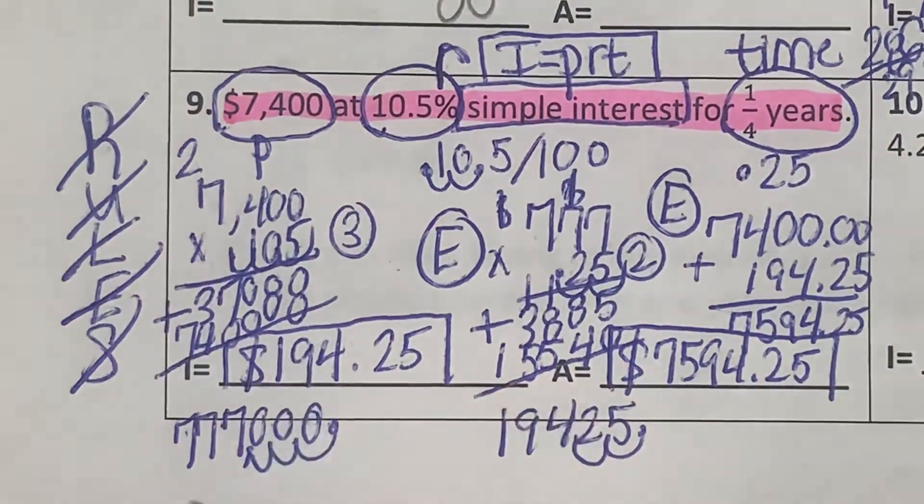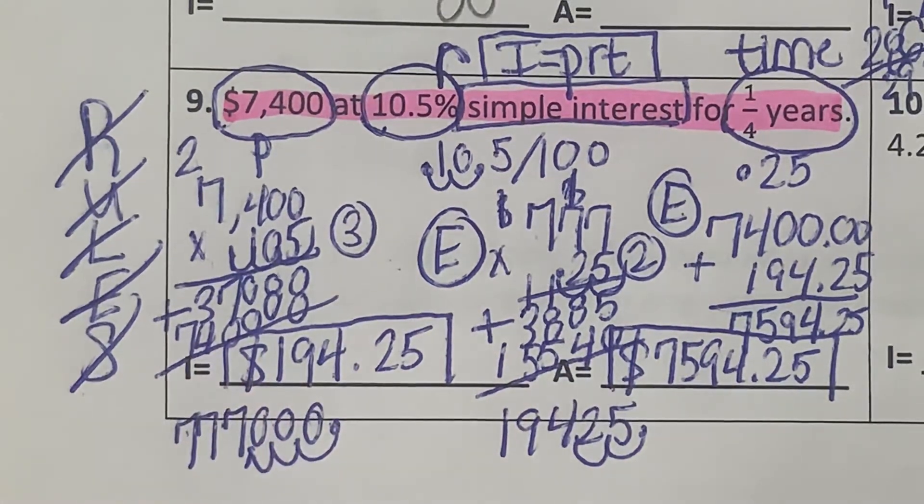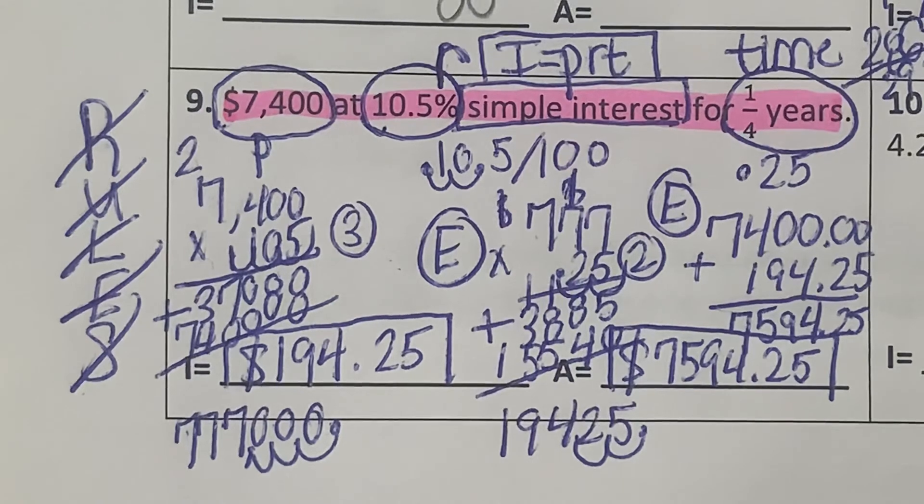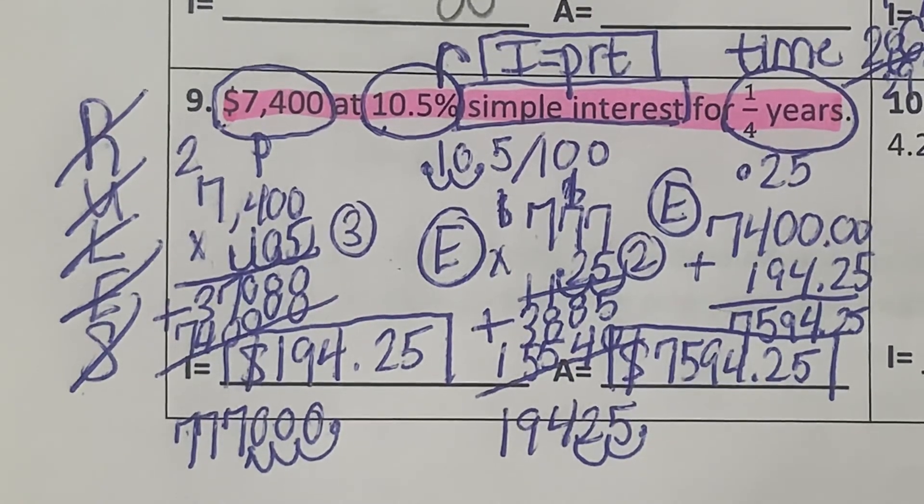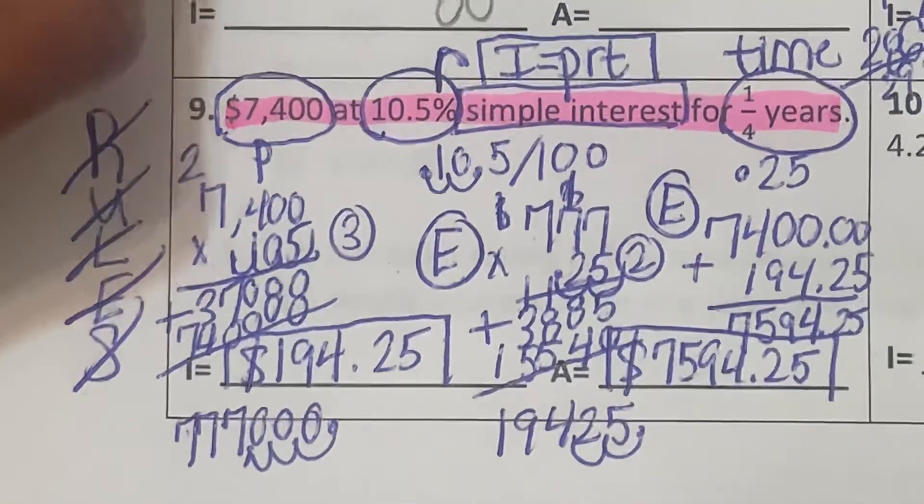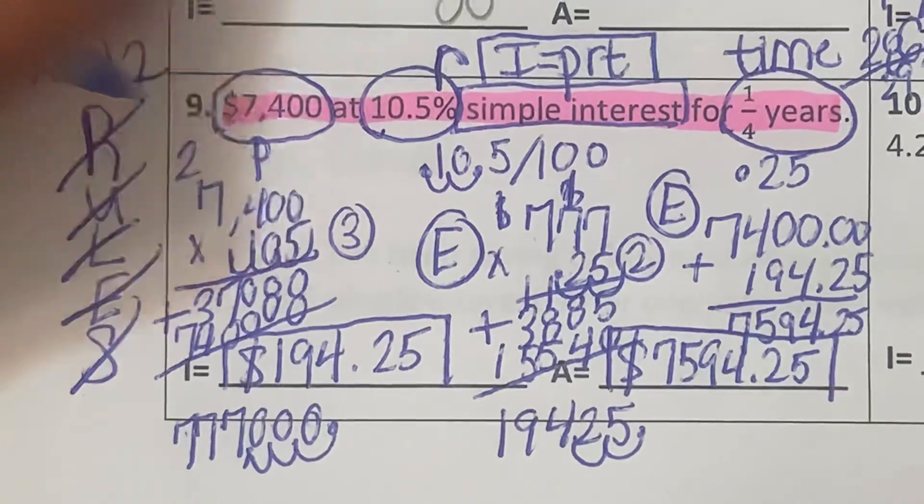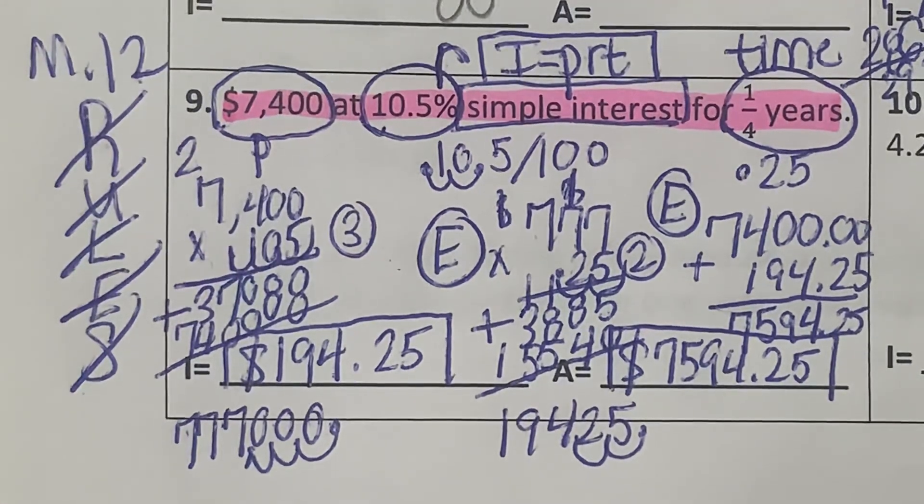A being the total amount, I being the interest. Those are important terms to know, so add those to your notes and your math journals. Remember this is M12. This is M12 and I Excel, so get more practice there. All right, I'll see y'all later. Thanks for watching.